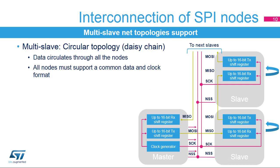Another multi-slave configuration is the circular topology, where the inputs and outputs of all the nodes are connected together in a closed serial chain. A common slave select signal is used for all the nodes as communication occurs at the same time. All nodes must have the same data and clock format configuration. Microcontroller SPI nodes typically use separate internal transmit and receive shift registers, so the data transferred between them has to be handled by software in a circular mode.